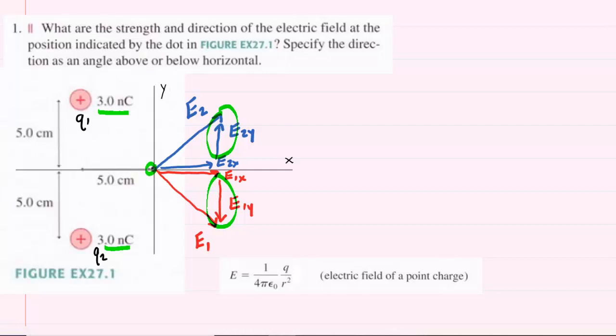So, we can actually simplify our diagram. We can remove the components E2y as well as E1y because they cancel. All that is left for the net electric field are the x-components, both of which are pointing to the right. So, our next goal is to find those x-components and then add them together to get our final answer.